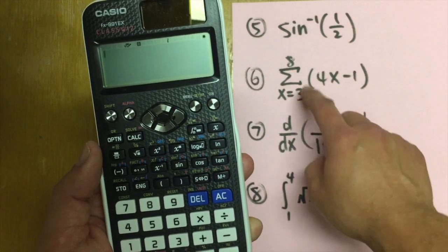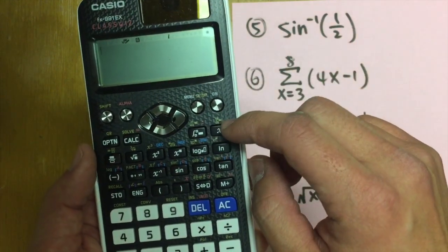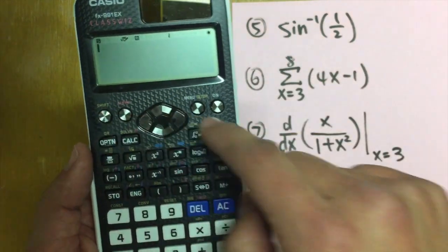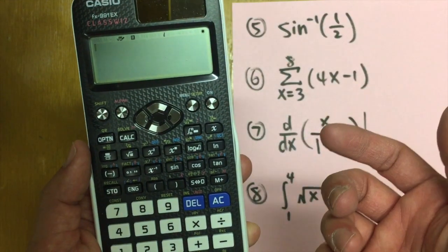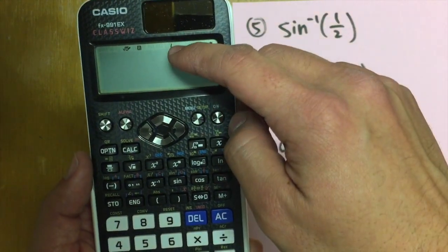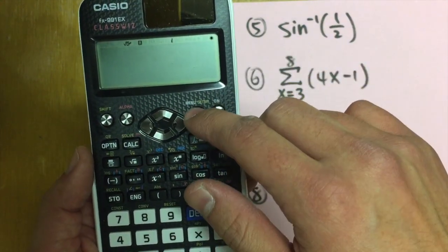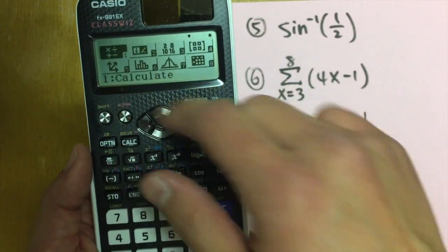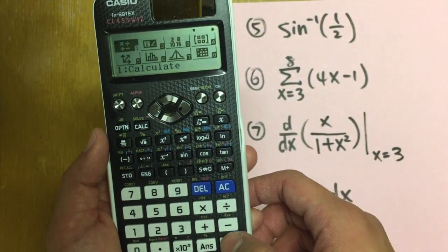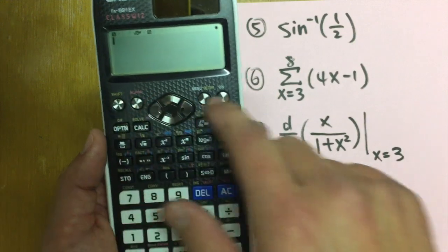And now let's do the summation right here. We have the summation in yellow right here. Let's go ahead and hit the shift and this. But you see, nothing pop out. And the reason is because we are still in the complex mode. To fix that, hit the menu button and go back to calculate and press equal. And now let's do it again.